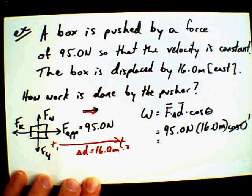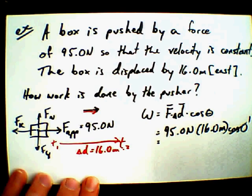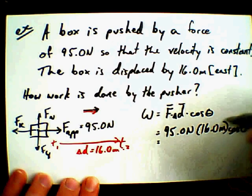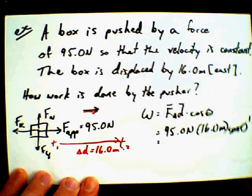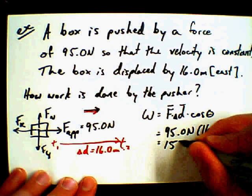So those two forces are what we call collinear. Anytime you've got two forces that are collinear, that is in the same direction, you've got a cosine of zero. All right, so 95 times 16 should be somewhere around 1,500. Is it 1,520? Okay. 1,520.